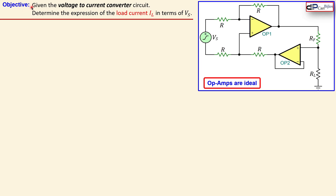We have an objective given by the following statement. Given the voltage to current converter circuit which is shown here, and the op-amps are ideal, determine the expression of the load current IL, which is through this RL, in terms of this input voltage VS.